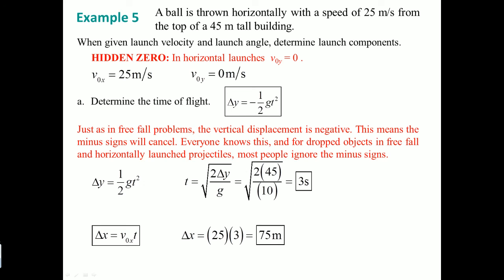A key idea: just as in freefall, the vertical displacement is negative, and this means the minus sign cancels out. Everyone knows this for dropping objects in freefall and horizontal launch projectiles, so most people omit writing the minus sign. There is no minus sign shown in the equation because it is already embedded — that's the key point. The last several problems are math-heavy with little additional explanation; it's mostly plug-and-chug.